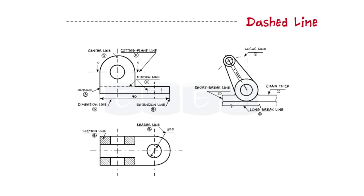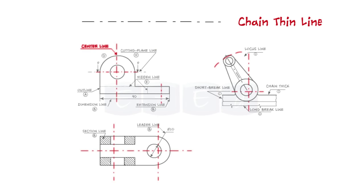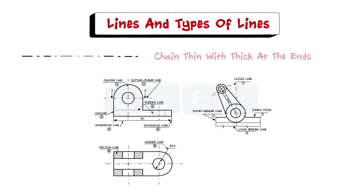Next is the dashed line. This line is used to show hidden edges of the main object. Next is the chain thin line, long dash dotted. This line is used to represent the center line for circles and arcs. Next is the chain thin line with thick at the ends. This line is used to represent the location of a cutting plane.